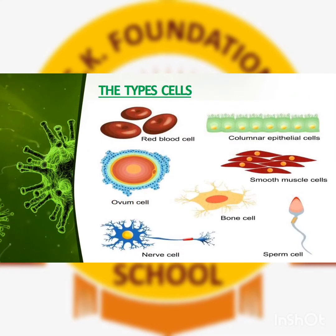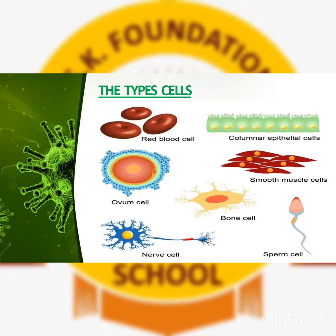After learning what a cell is, you need to learn how many types of cells there are in the body. Cells have various types. Here you can see a red blood cell, an epithelial cell (which means your skin cells), an ovum cell, a bone cell, a nerve cell, a sperm cell, and a smooth muscle cell. So cells have many sizes and shapes.